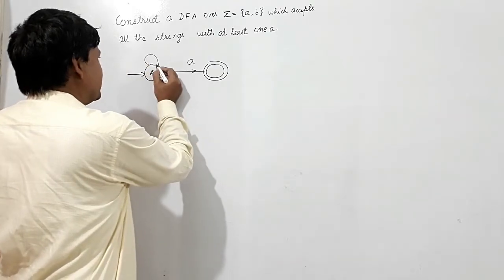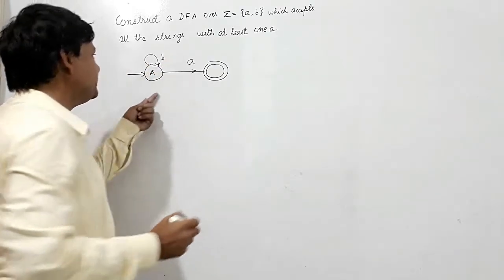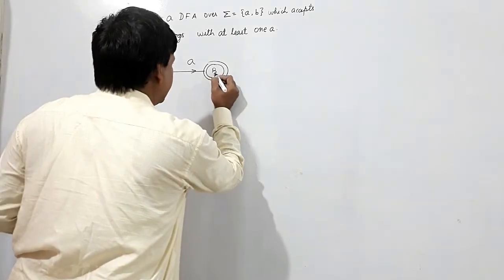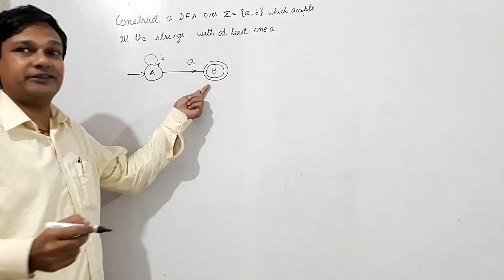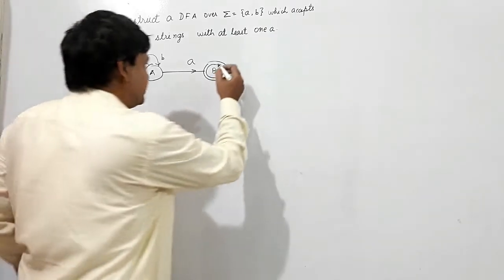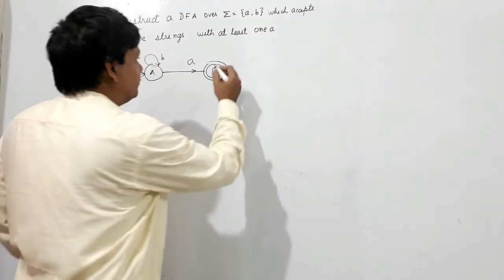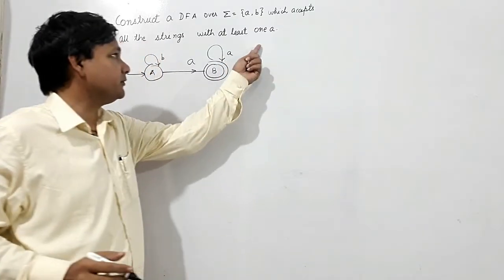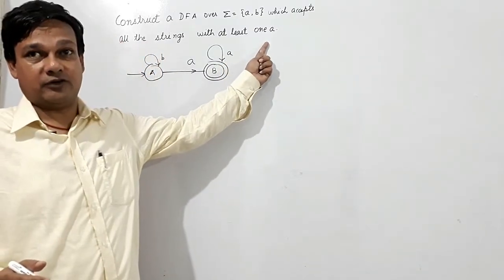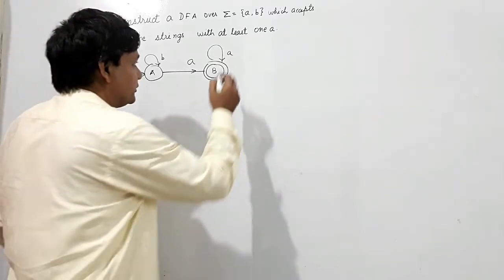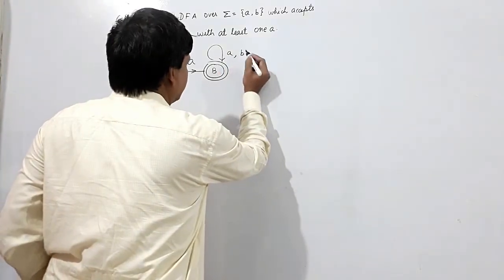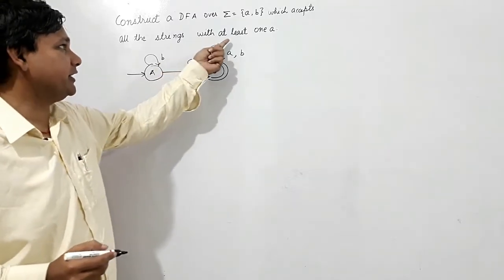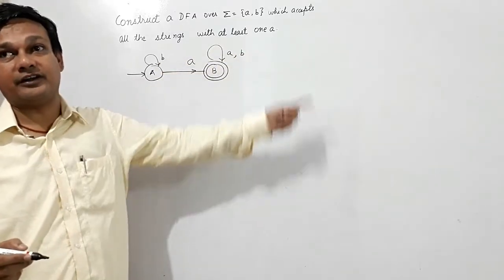But when I get B, it should remain in the initial state — not in the final state. But when it then gets A, it reaches the final state. When it gets more A's, no problem, because A's are more than one. Or if it gets B, no problem, because the condition is that it should contain at least one A.